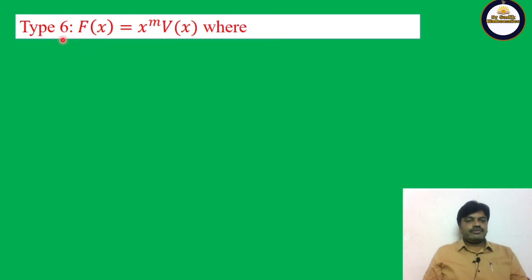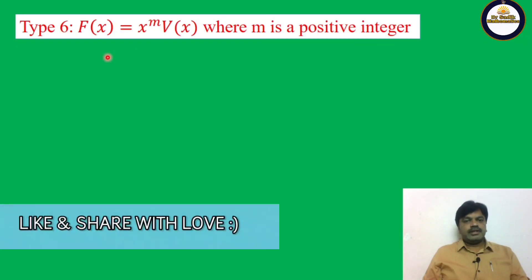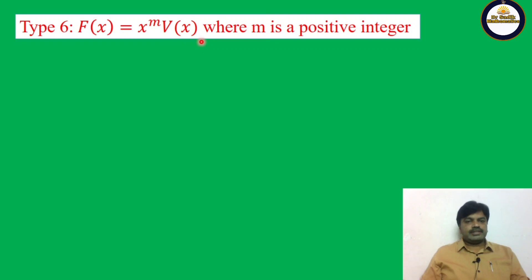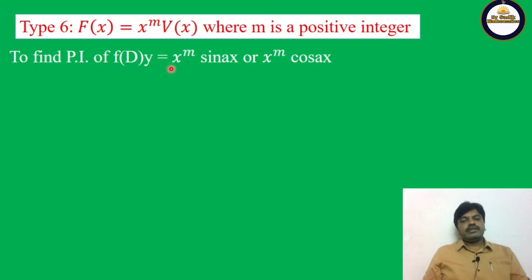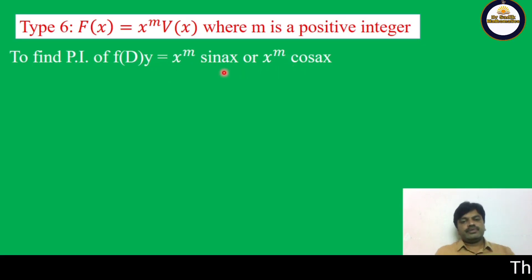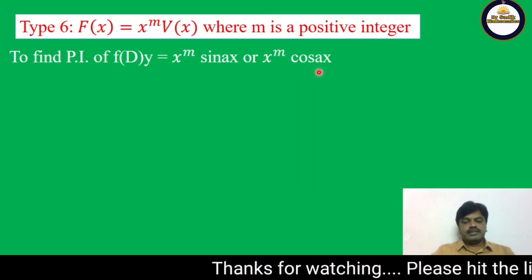This is Type 5 or 6. f(x) = x^m · v(x), where m is a positive integer and v is a function of x. To find the particular integral of f(D) of y = x^m, here v is sin(ax) or cos(ax).